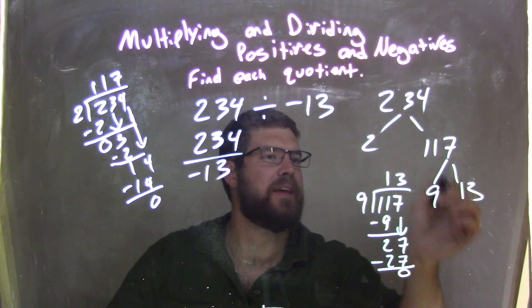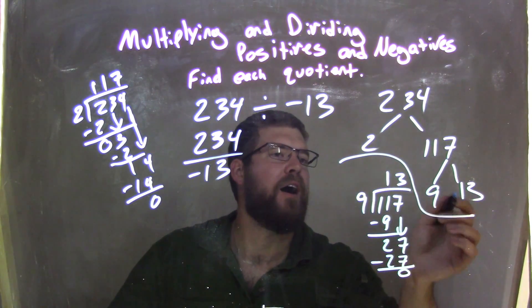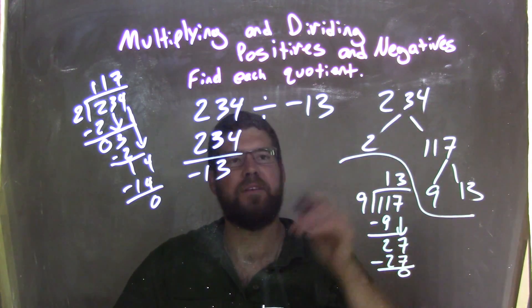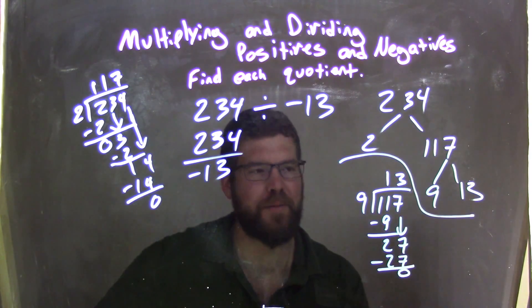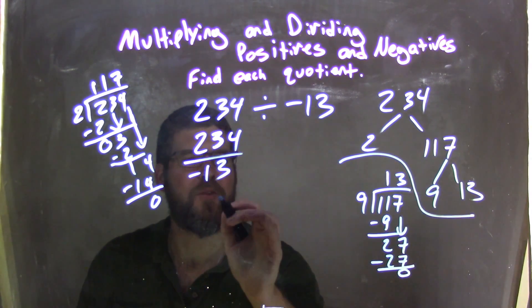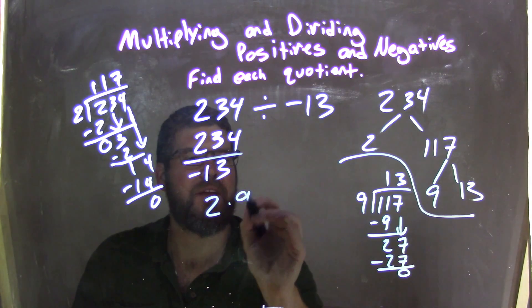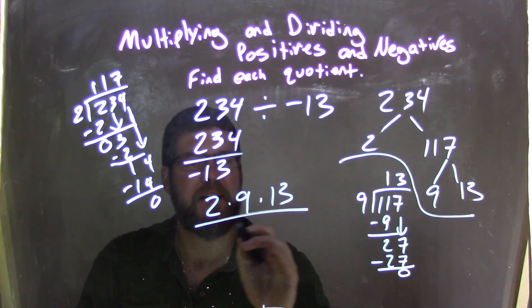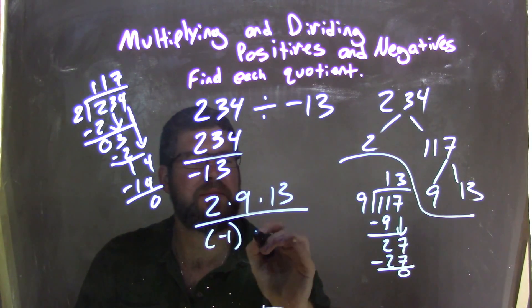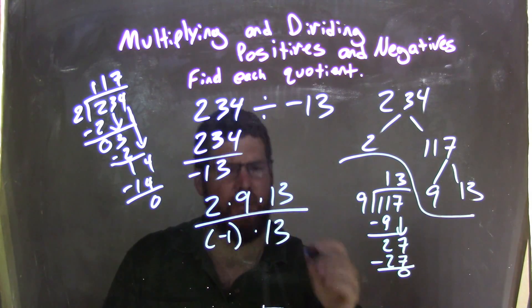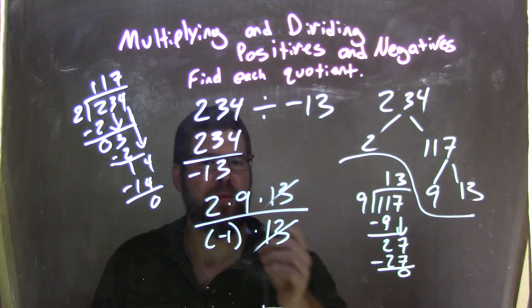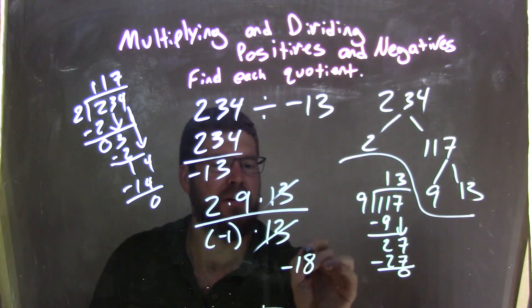So 9 times 13 is 117, and 2 times 117 is 234. So the numerator breaks down, believe it or not, this is one of the most tricky, 2 times 9 times 13. The denominator is just negative 1 times 13. Well, we can cancel the 13s out, and we're left with 2 times 9, which is 18, divided by negative 1, negative 18, our final answer.